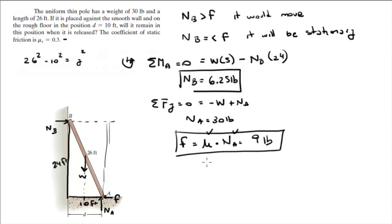And that's it. As you can see, the friction, which is 9 pounds, is bigger than the normal at B, which is trying to push the rod and make it move. Therefore, it's our second condition, which means it will stay stationary.